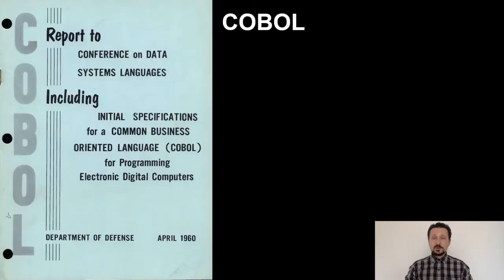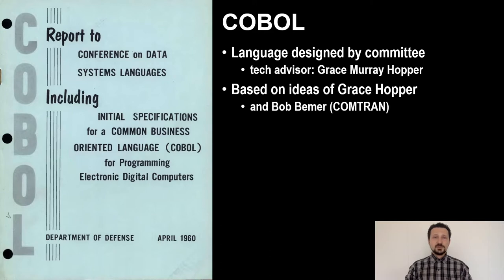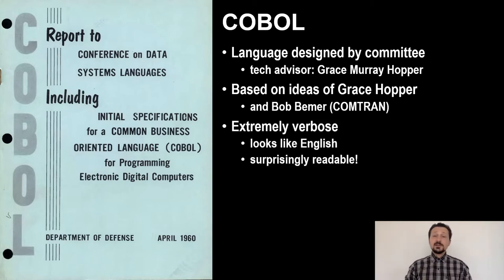COBOL is the obvious choice. Everybody has heard of it. It's a language that was designed by a committee, but the advisor was the famous Grace Murray Hopper — inventor of automated compilation and designer of other languages. It is extremely verbose, it looks like English, and it is surprisingly readable. Even very old COBOL code can be read without preparation, unlike Perl, Java, or Haskell.